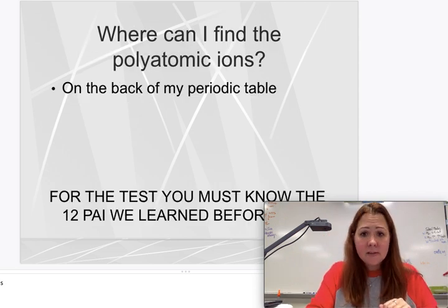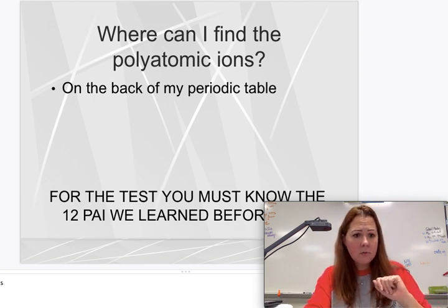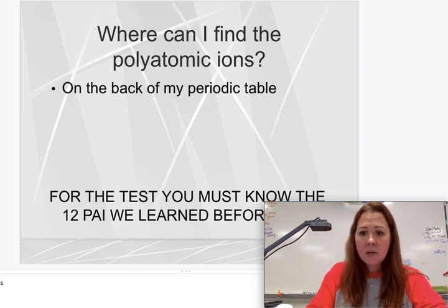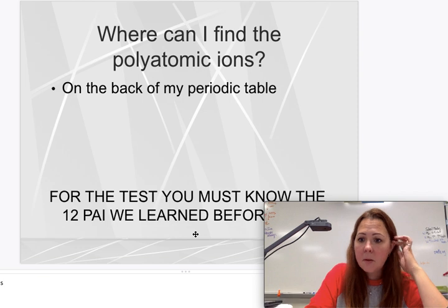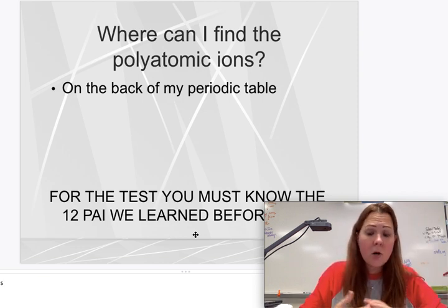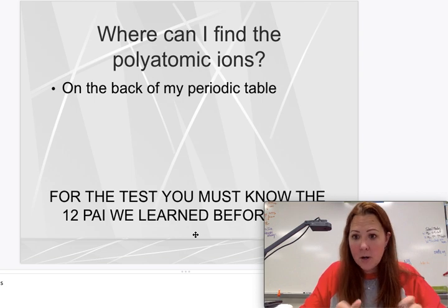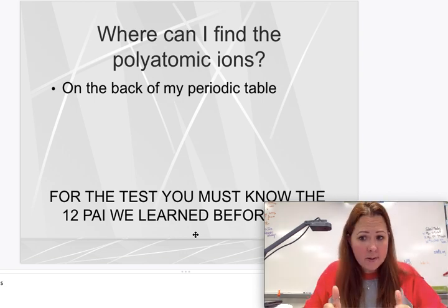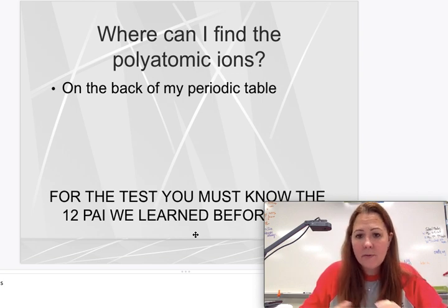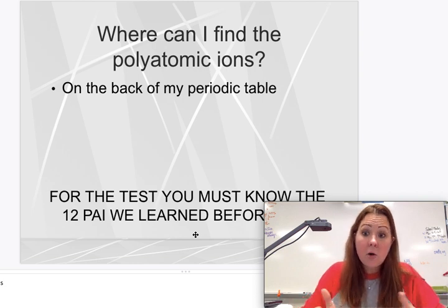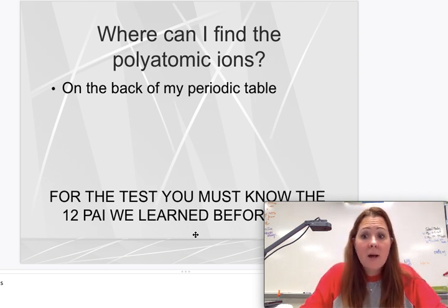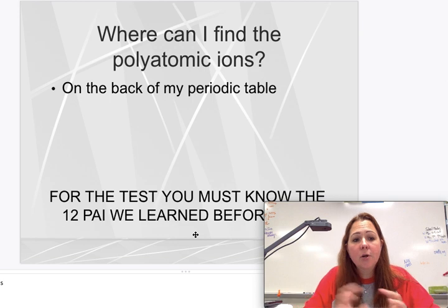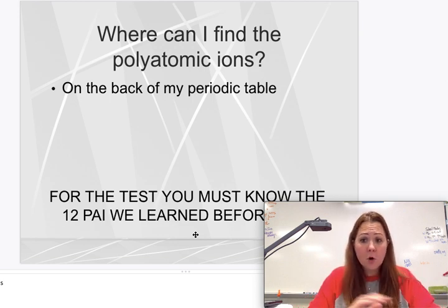So as you see these things on the back of your periodic table, they're always going to be given to you. Now it does say on the slide for the test, you must know the 12 polyatomic ions that we learned before. This year, because of COVID, we're not learning that. In a normal year, you have the 12 that you're going to have to memorize. Second semester, if everybody's face-to-face, we're going to go back to normal and you'll have those 12 that you'll need to know. By that point, you should know them anyways. But you do have, in a normal year, 12 polyatomic ions that you just have to know the names and the formulas for because it makes your life so much easier when it comes to the nomenclature because you're going to have to use them over and over and over all year long.